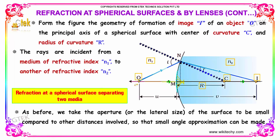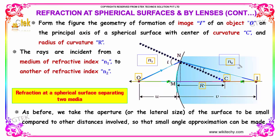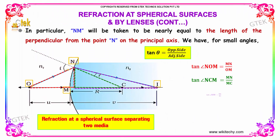From the figure, the geometry of formation of the image of an object O on the principal axis of a spherical surface with center of curvature C and radius of curvature R. The rays are incident from a medium of refractive index N1 into refractive index N2. Here is the lens. As before, we take the aperture of the surface to be small compared to other distances involved so that the small angle approximation can be made.